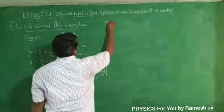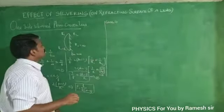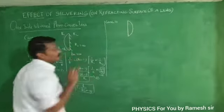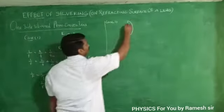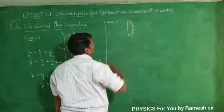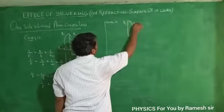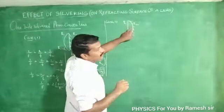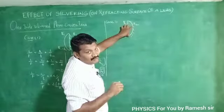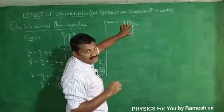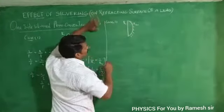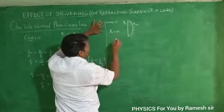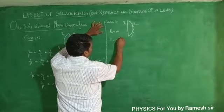Case 2: suppose the convex surface of the plano-convex lens is silvered. Here r1 is the radius of curvature of the first surface, which is the plane surface, and r2 is the radius of curvature of the convex surface. We know that r1 equals infinity for the plane surface, and r2 equals r.